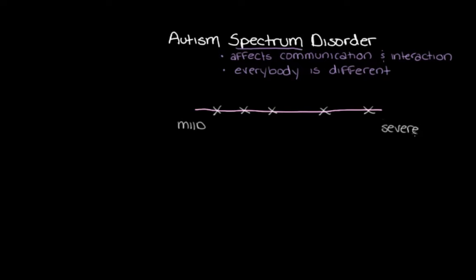While this is a spectrum disorder and everyone with Autism Spectrum Disorder has different experiences, there are a few key signs that are common among people with Autism Spectrum Disorder. We're going to check these out so we can understand a little bit more about what Autism Spectrum Disorder is. There are a few different ways to characterize these common signs, and I'm just going to do it one way, though there are other possible ways too.